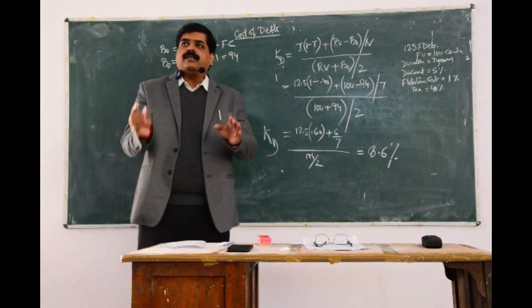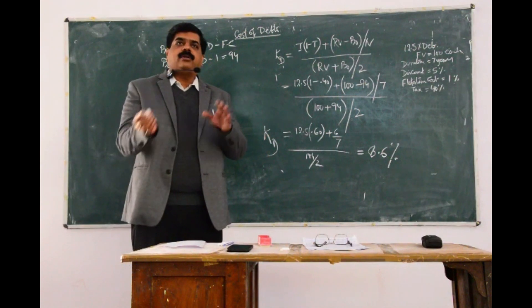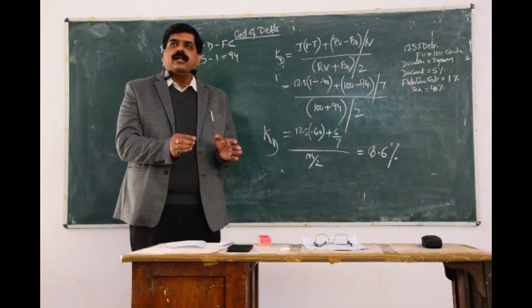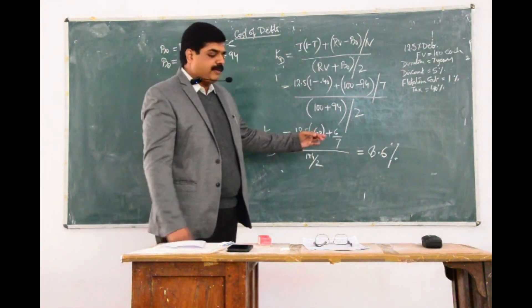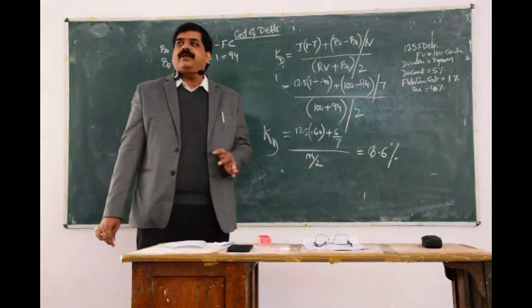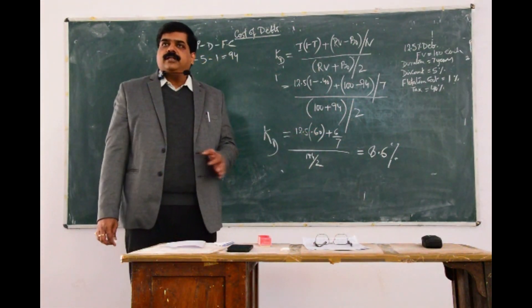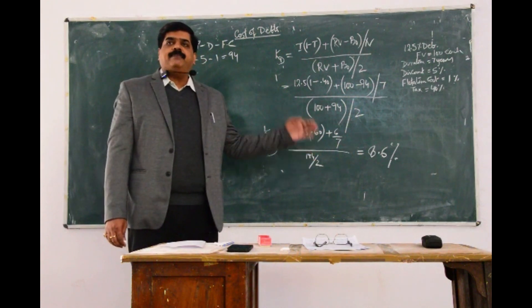If you remember the trial and error method, there also we have done the same problem and there itself we have received the cost of debt at 8.7 something. That means 8.6 here, 8.7 there.